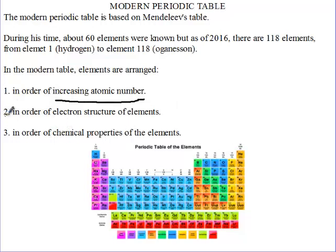The second property is that elements are arranged in order of electron structure. That is, if sodium has one electron in its outer shell, the same will apply to lithium, the same will apply to potassium, and so on. So elements are arranged in order of electron structure.